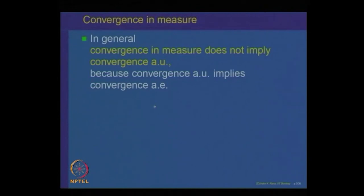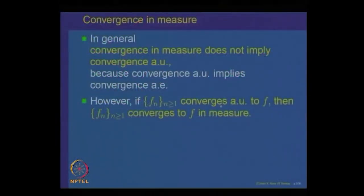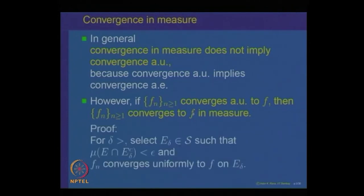We showed that convergence in measure does not imply convergence almost everywhere. We want to conclude that convergence in measure does not imply almost uniform convergence, because almost uniform convergence implies almost everywhere convergence. If convergence in measure implied almost uniform convergence, then it would also imply convergence almost everywhere, which is not true in general. However, if F_n converges almost uniformly to F, then it also converges in measure — the converse is always true.